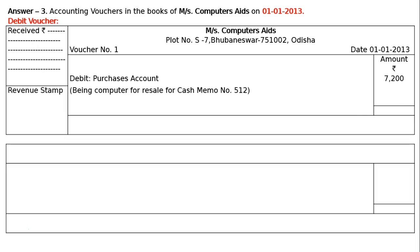And the totaling of the amount column will be rupees 7,200. Being purchased computer for resale for cash memo number 512. The totaling is 7,200. Next line: the signature of the manager and accountant. In the left side it will be SD manager, and in the right side it will be SD accountant.